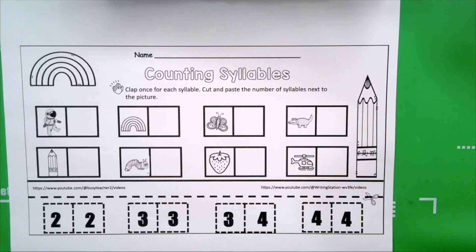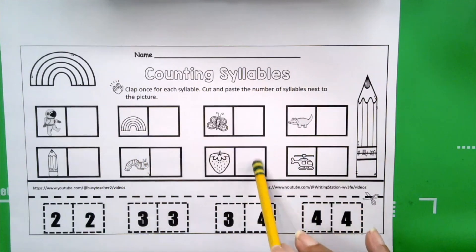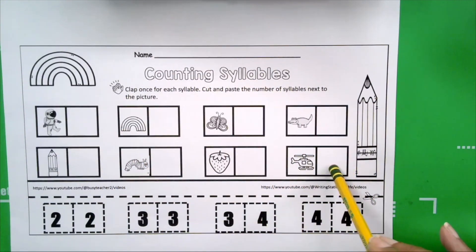Let's read our directions, and the directions are the same. We're going to clap once for each syllable. We're going to cut and paste the number of syllables next to the picture, and that will tell us how many syllables there are in that word.